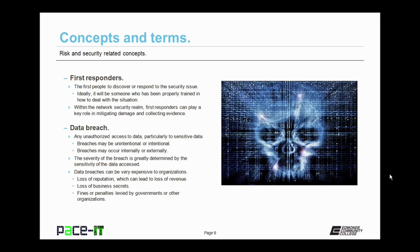Data breaches can result in a loss of reputation, which can lead to a loss of revenue. When it became known that Target lost sensitive customer information — credit card information — people became unwilling or uncomfortable with shopping at Target. Even though they quickly fixed the breach, the results lingered on. A data breach may also result in a loss of business secrets, which may cost an organization a competitive advantage. And finally, data breaches may result in fines or penalties levied by governments or other organizations.